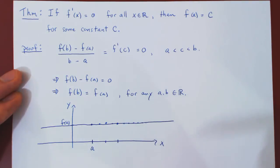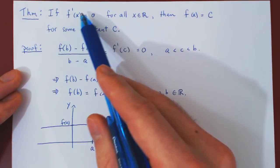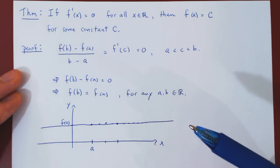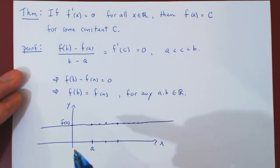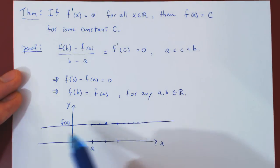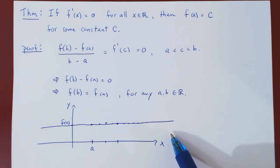But remember that this is a very intuitive result. If the derivative of a function is always equal to zero, its rate of change is zero, the curve is never changing. Therefore, it must be a constant function. So its graph is a horizontal line. And that's it.